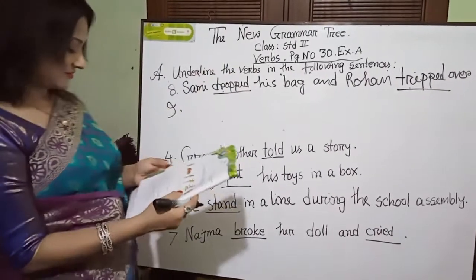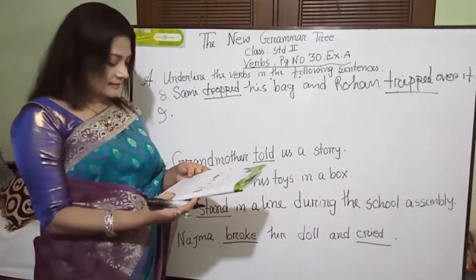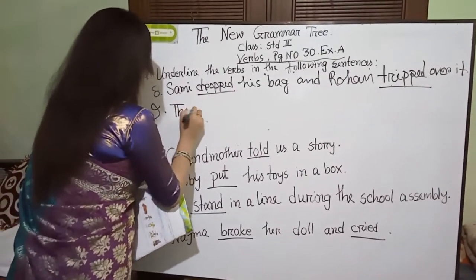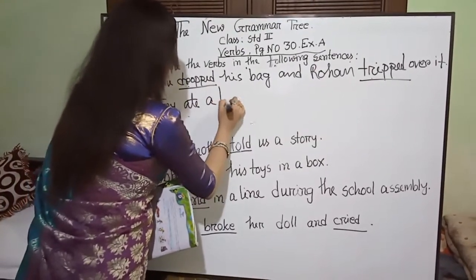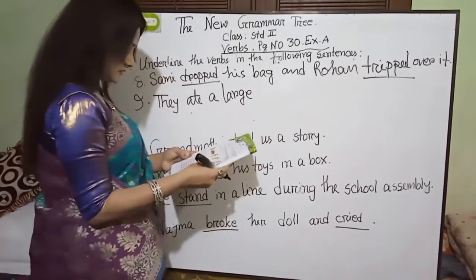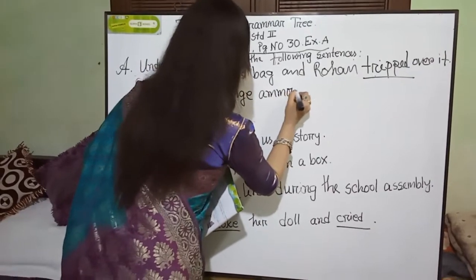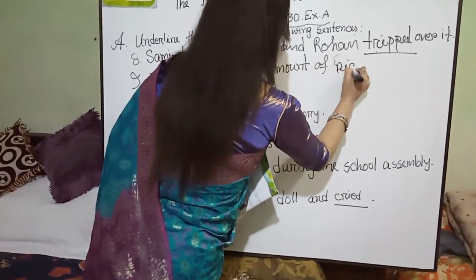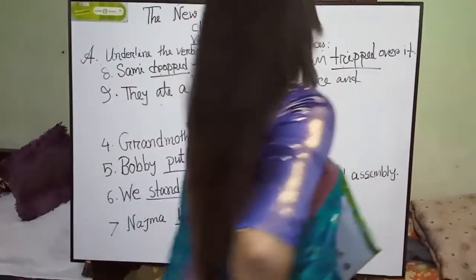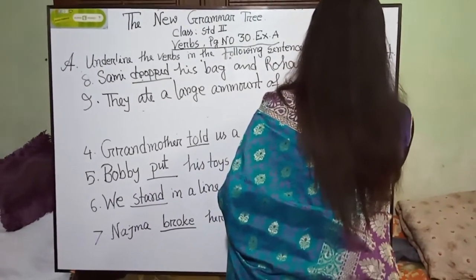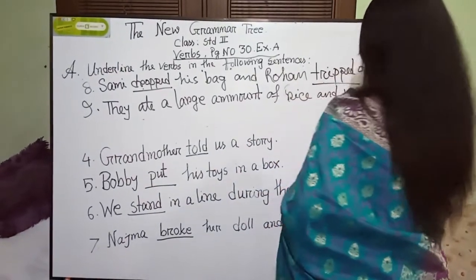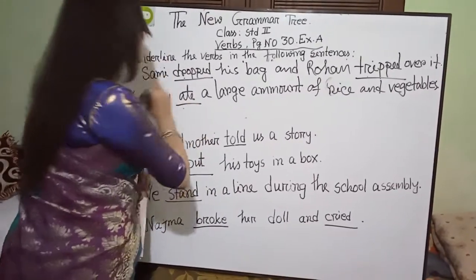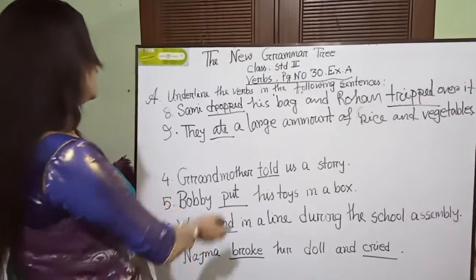Number 9: Students, please follow me. They ate a large amount of rice and vegetables. Here, 'ate' is a doing word. That's why 'ate' is a Bhar.